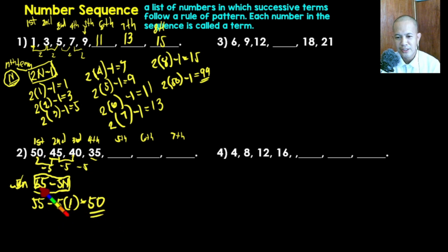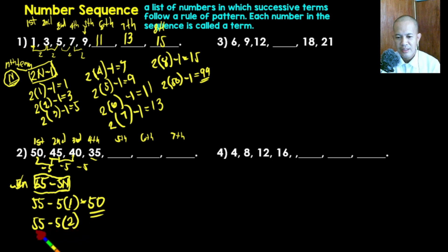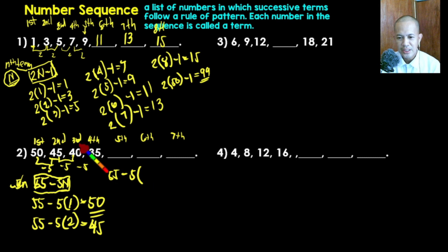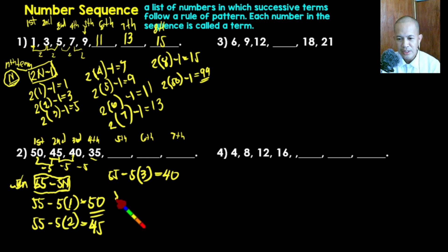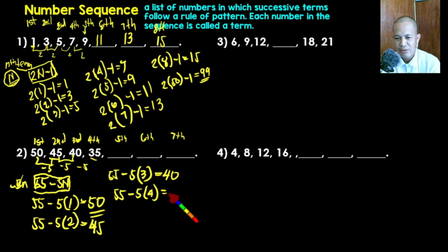For the second term, applying the formula 55 minus five times two: five times two is ten, so 55 minus ten gives 45. For the third term: 55 minus five times three — five times three is fifteen — 55 minus fifteen gives 40. For the fourth term: 55 minus five times four — five times four is twenty — 55 minus twenty gives 35.